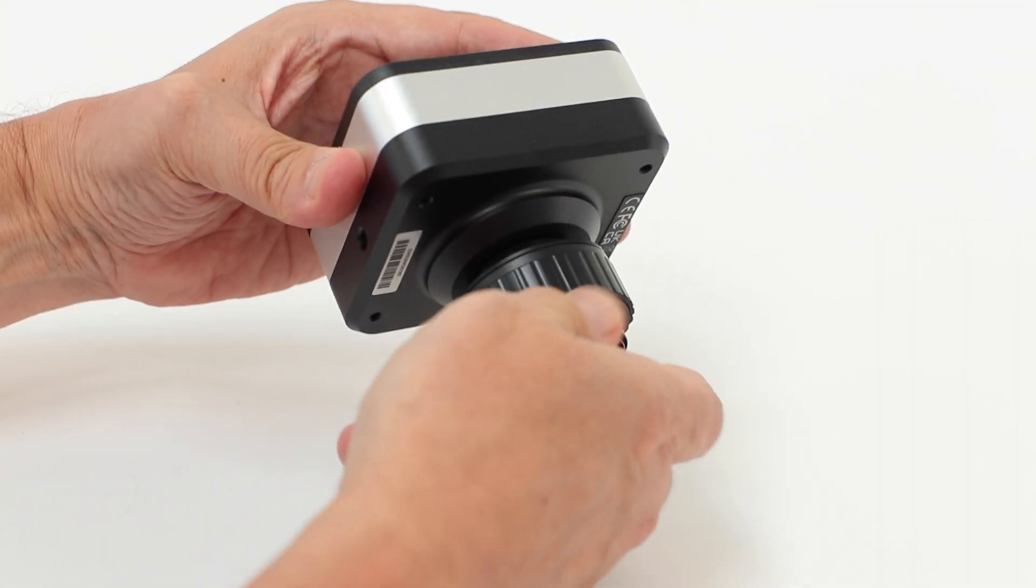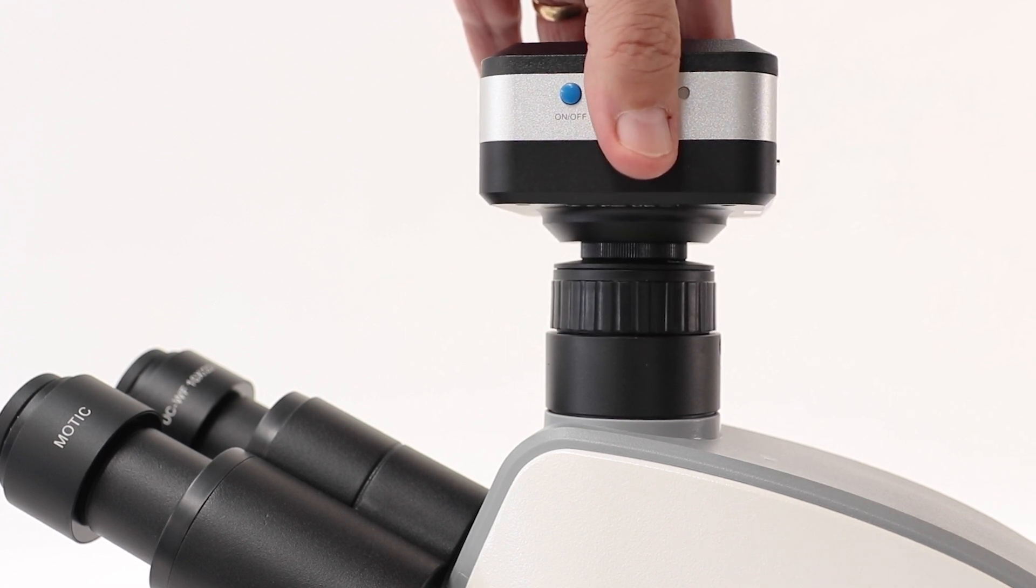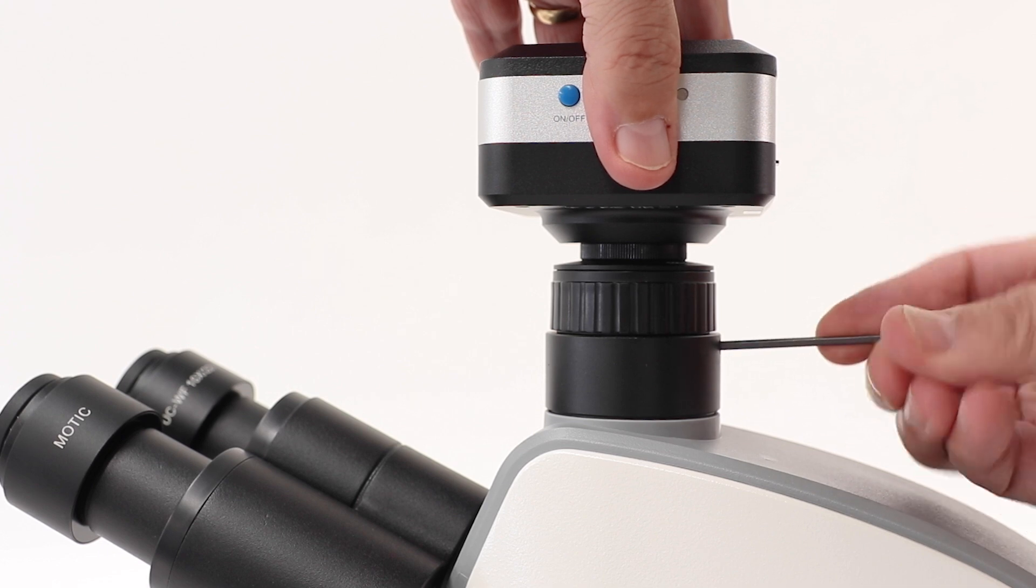First, attach your camera to the adapter. Then place the assembly onto the microscope's trinocular port. Secure it using the allen key provided.